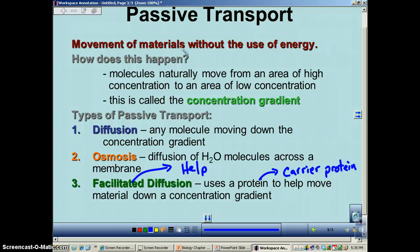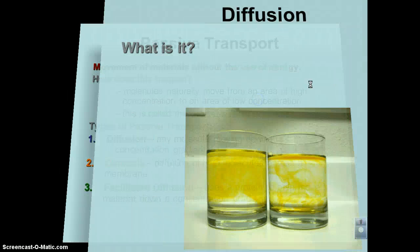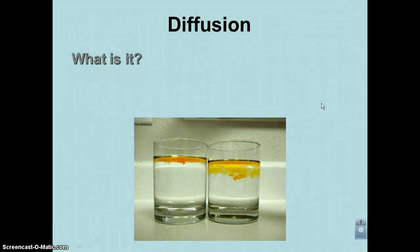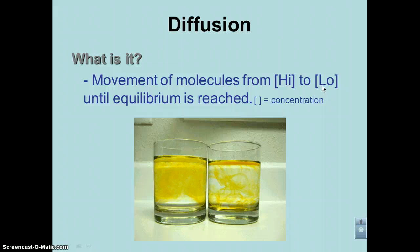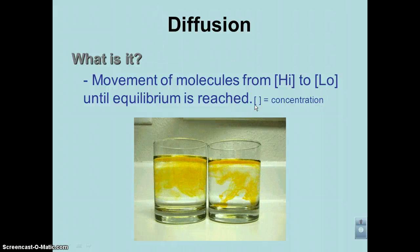The best way to remember the three types of passive transport is the acronym DOF: Diffusion, Osmosis, Facilitated diffusion. Diffusion is the movement of molecules from an area of high concentration to an area of low concentration — you're moving down that concentration gradient.